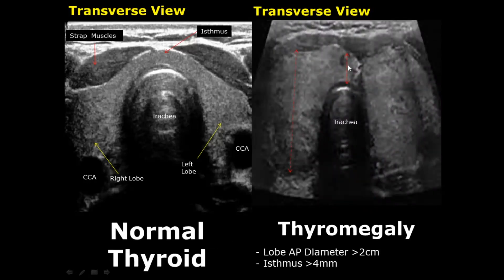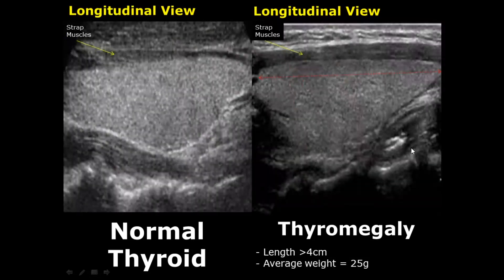We start off with thyromegaly, which is the enlargement of the thyroid gland. When the AP diameter is more than two centimeters and the isthmus is more than four millimeters, this is suggestive of thyromegaly. In the longitudinal view, we can measure the length of the thyroid gland; the normal value is around four centimeters. If it is more than four centimeters, it can be a signal of thyromegaly. The average weight of the thyroid gland is around 25 grams.